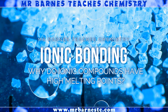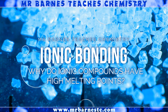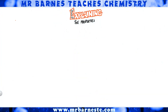Hi guys, welcome to this video looking at why ionic compounds have high melting points. Before we get on to explaining the property, it's really important for you to know what type of bonding you've got. In the exam they won't tell you whether it's ionic or metallic bonding — they will give you the name of a chemical and ask you to explain why it has a high melting point, why it doesn't conduct, and so on. So you've got to be able to work out what type of bonding is going on.